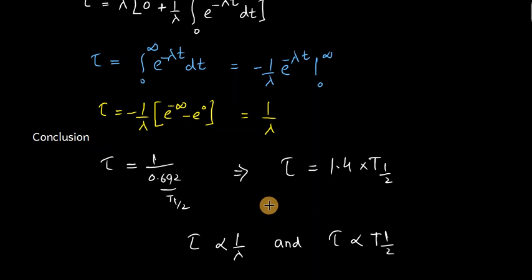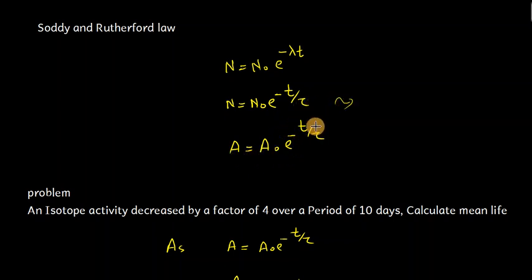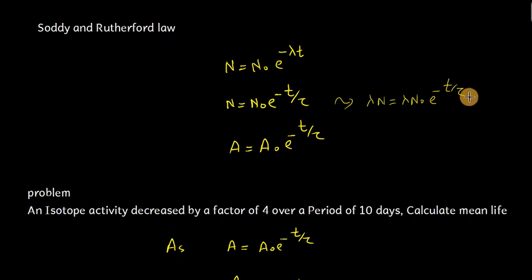Based on this, let us now look at the radioactive decay law. We know the Soddy–Rutherford law: N equals N₀ e^(−λt). Since λ equals 1/τ, substituting gives N equals N₀ e^(−t/τ). This is the Soddy–Rutherford law in terms of nuclei numbers. In terms of activity, multiplying both sides by λ gives A equals A₀ e^(−t/τ). This is the Soddy–Rutherford law in terms of activity.